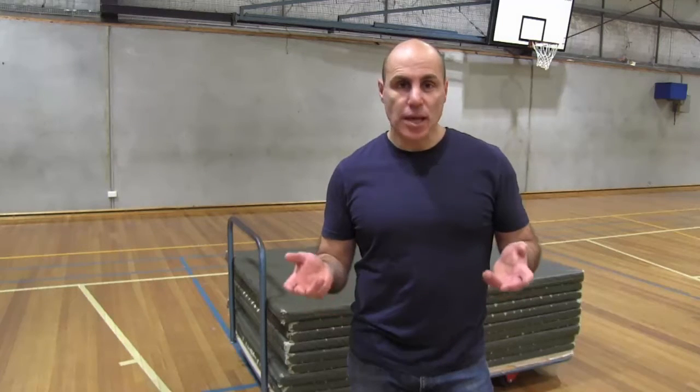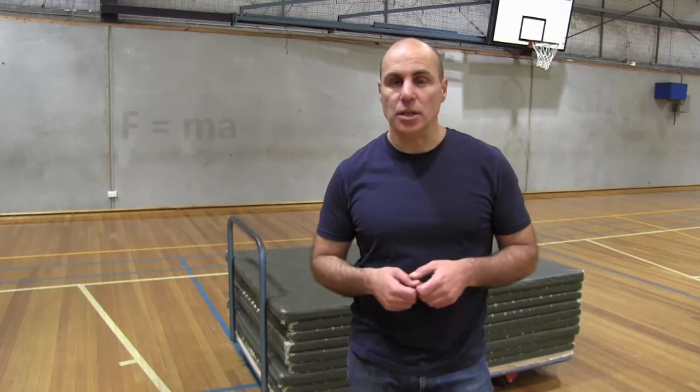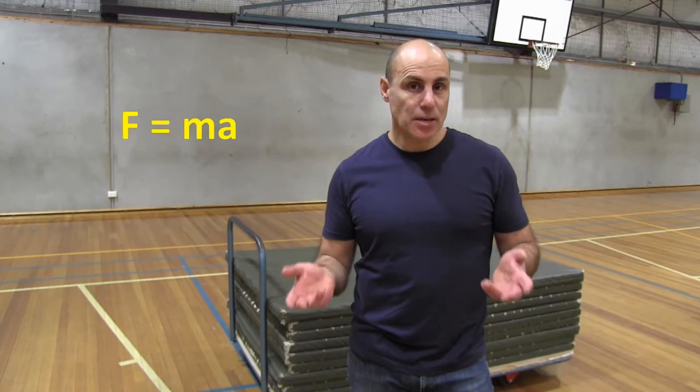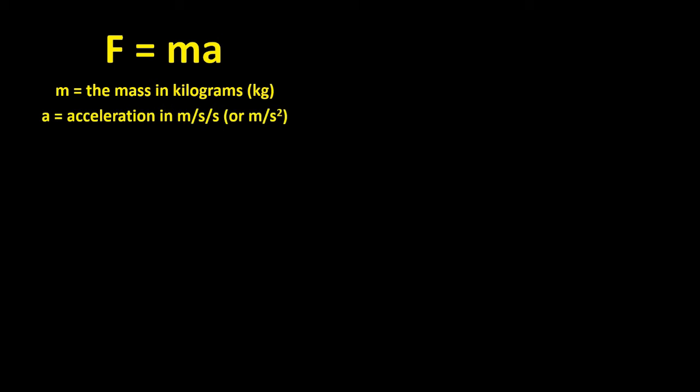We can express the relationship between force, mass and acceleration in a single equation: F equals MA. In this equation, M equals the mass in kilograms, A equals the acceleration in meters per second per second, or meters per second squared, and F equals the force that acts on the object, in a unit called the Newton, which is given the symbol N.